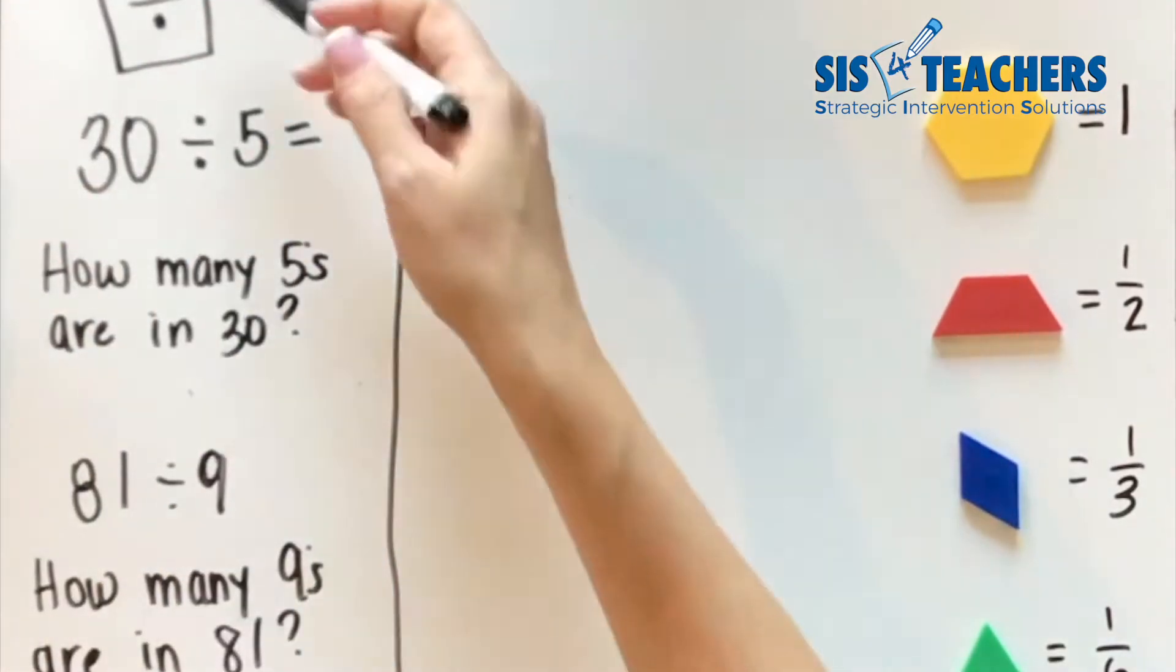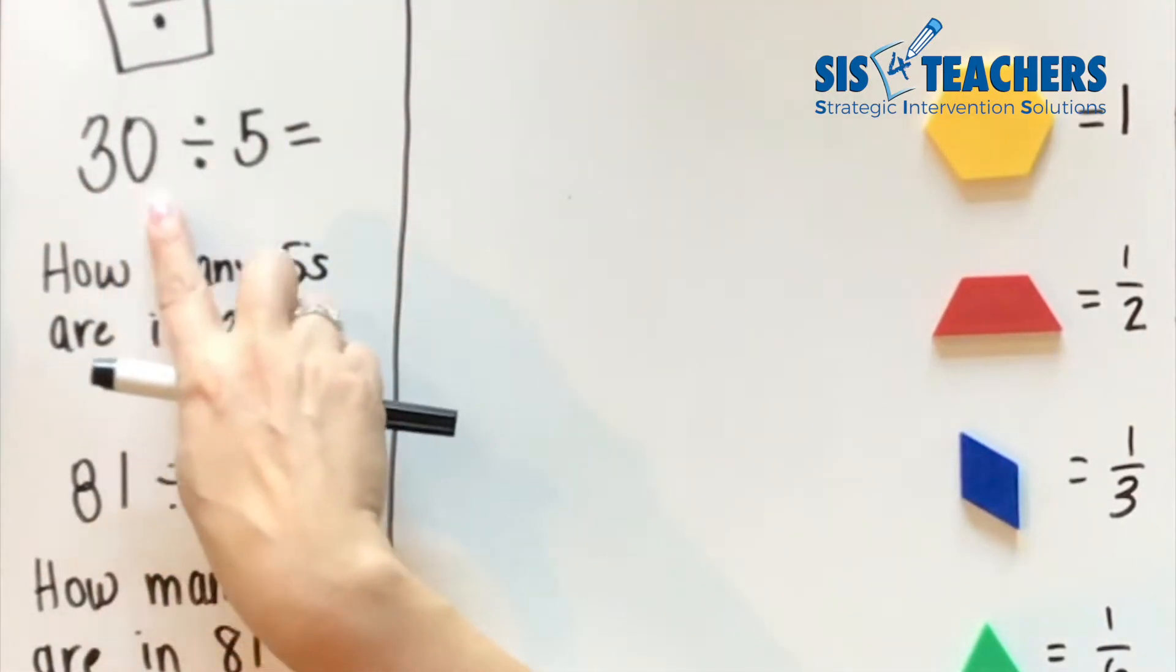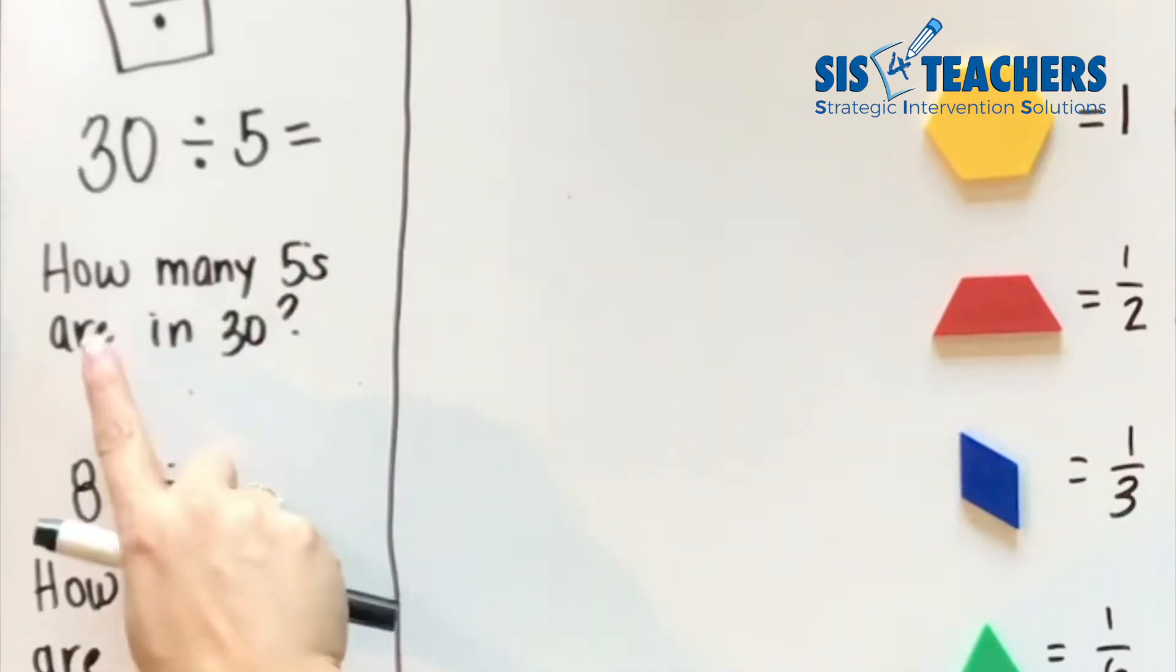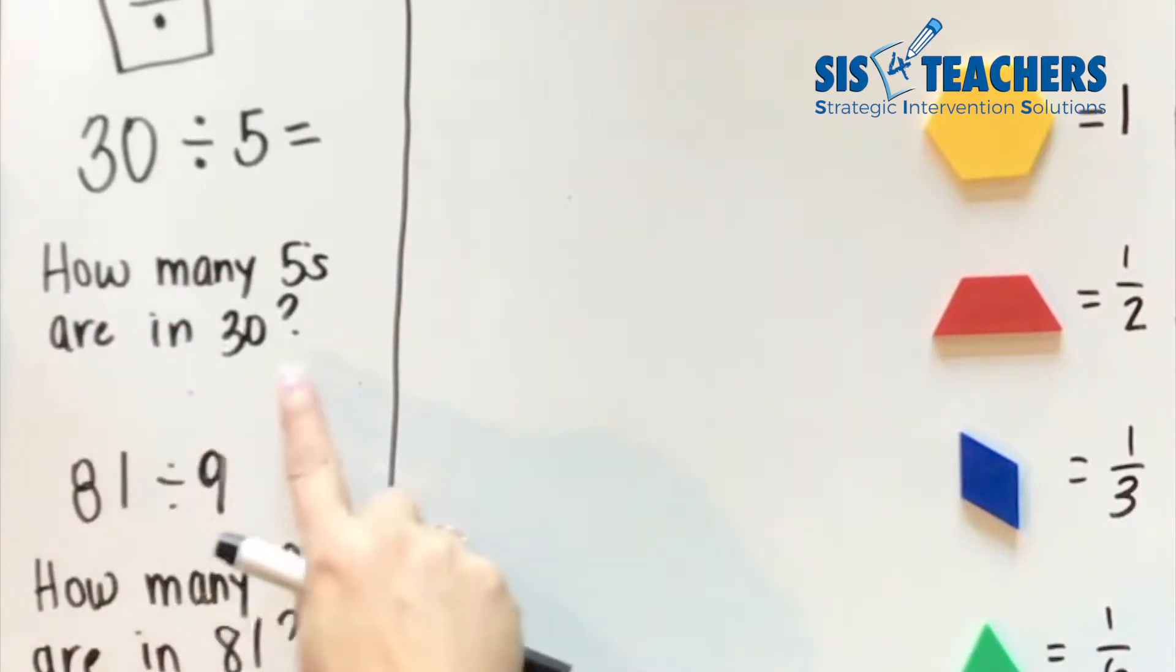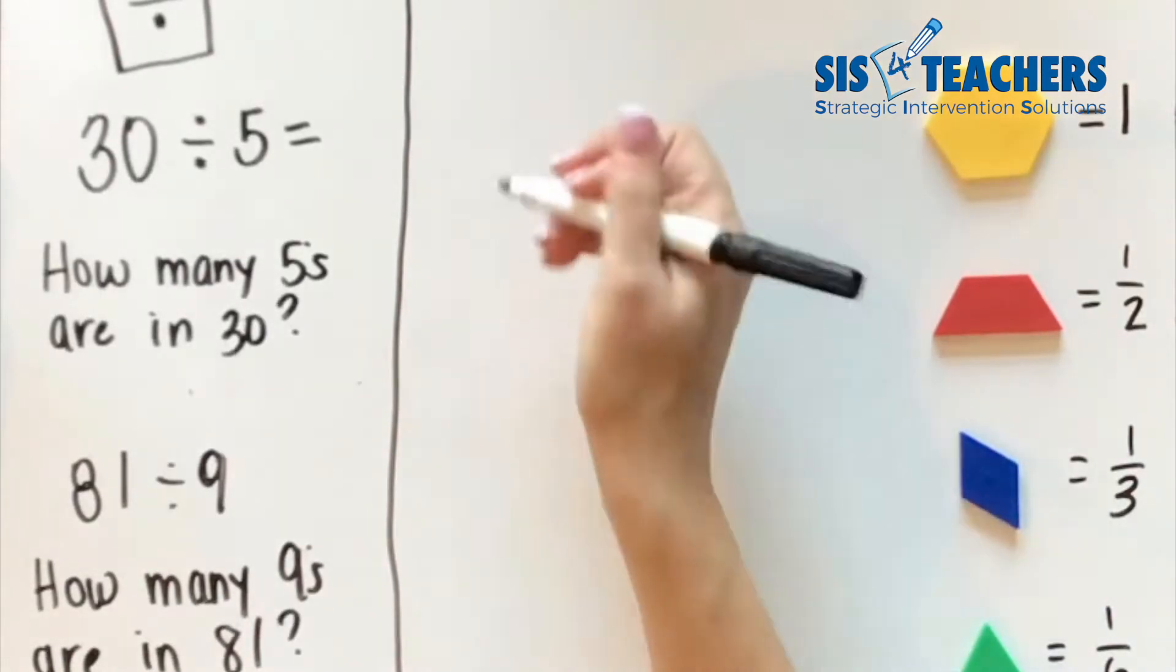Going back to what we talked about with division, 30 divided by 5 really means how many groups of 5 are there in 30. When we look at 81 divided by 9, it really means how many 9s are there in 81. If we can take the understanding of what we know from whole numbers and relate it to what we're doing with fractions, it will make a lot more sense to students.